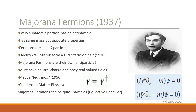As of yet, no fundamental particle has been found to behave as a Majorana fermion, but Ettore himself believed neutrinos to be a possible candidate. Even today, neutrinos have not been resolved to be Dirac fermions or Majorana fermions. But from condensed matter physics, we have found quasi-particles which behave collectively as Majorana fermions. The similarities between Dirac fermions and Majorana fermions can be seen by the Dirac equation and Majorana equation shown here.